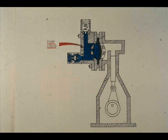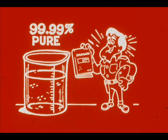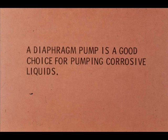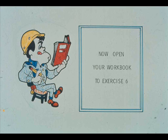Note that the liquid being pumped does not touch any part of the pump that requires lubricating oil. Some liquids must be kept so pure that they cannot stand even minute contamination from traces of lubricating oil — a diaphragm pump is a good choice for pumping such liquids. A diaphragm pump is also a good choice for pumping corrosive liquids, since liquid does not touch and therefore cannot corrode most pump parts. Only the diaphragm, valves, and liquid chamber need to be protected against corrosion. Now open workbook number two and complete exercise six.